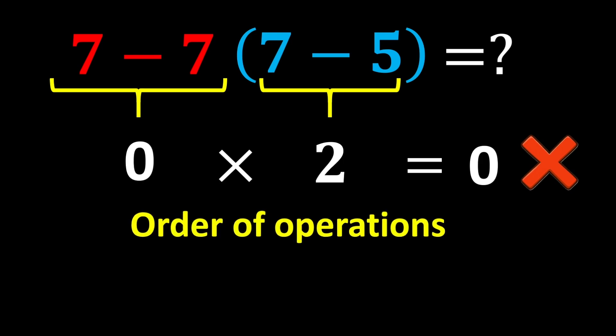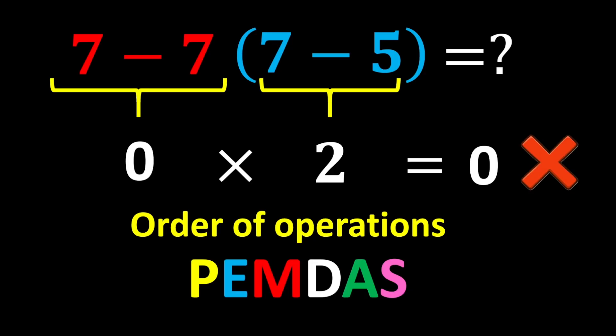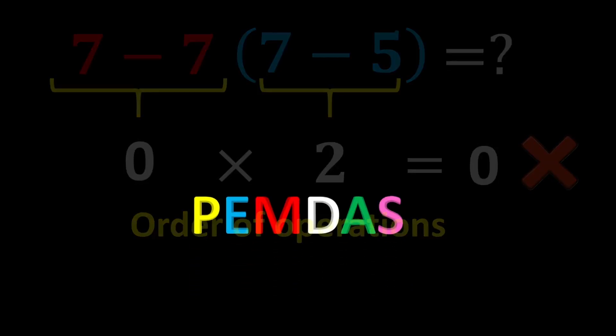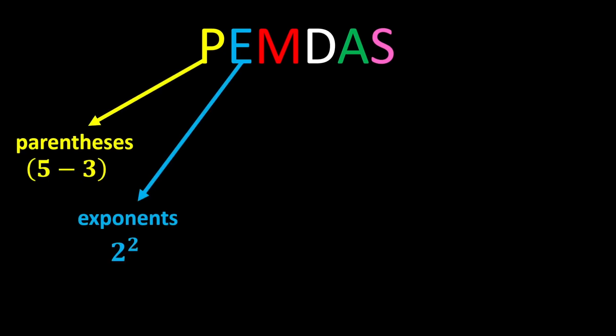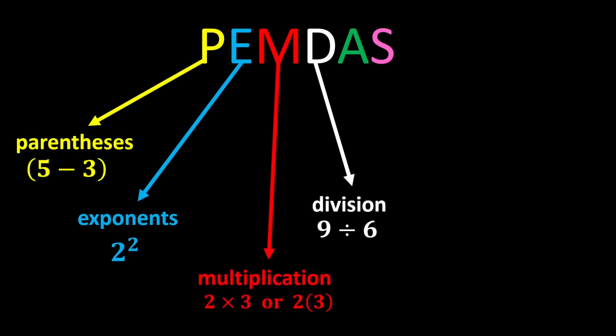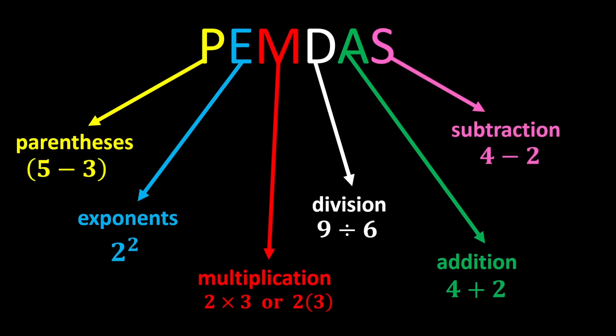The order of operations is known by the acronym PEMDAS, with each letter representing a step. P stands for parentheses, E stands for exponents, M stands for multiplication, D stands for division, A stands for addition, and S stands for subtraction.